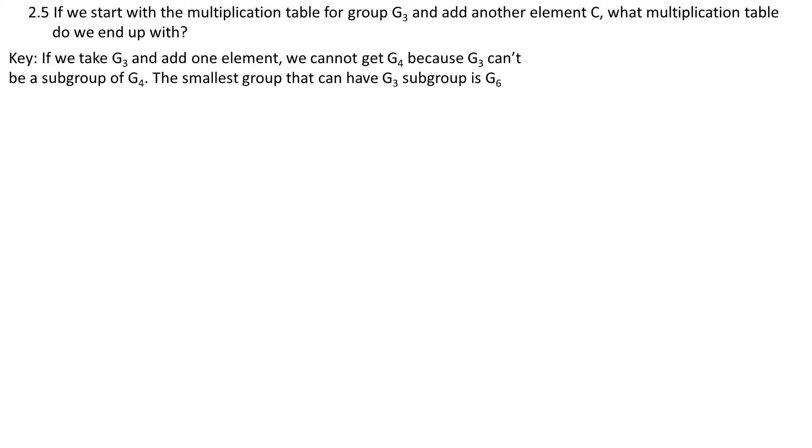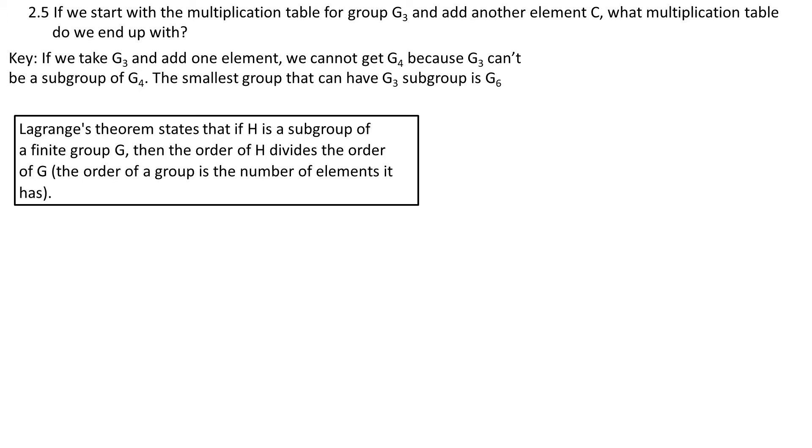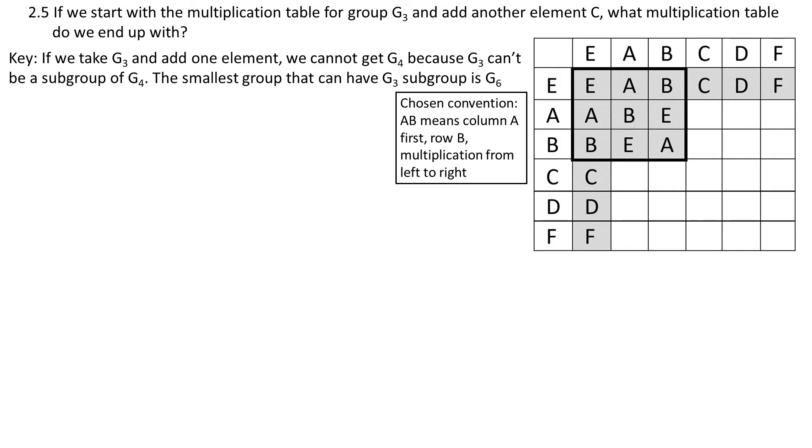The key to the answer is that if we take G3 and add one element we cannot get G4 because G3 can't be a subgroup of G4. The smallest group that can have subgroup G3 is G6. That just comes from Lagrange's theorem. It states that the order of the subgroup must be a divider of the order of the group. And the order of the group is just equal to the number of elements in the group. I already mentioned Lagrange theory in one of my videos, the link is in the description.